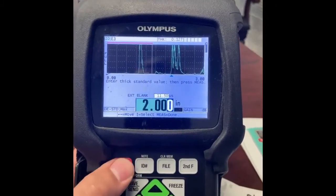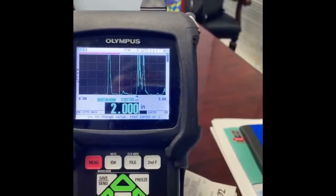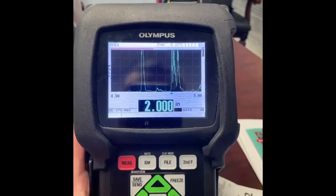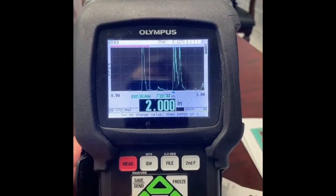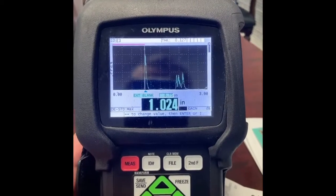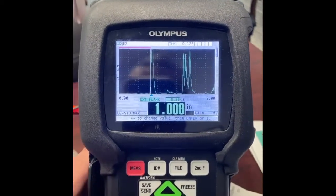and I'm going to tell the unit that that is two inches. I'll hit my measure reset. Then what I'll do is I'll take my wave adjust and I will move back my extension blank to read that first echo there and I am at one inch.